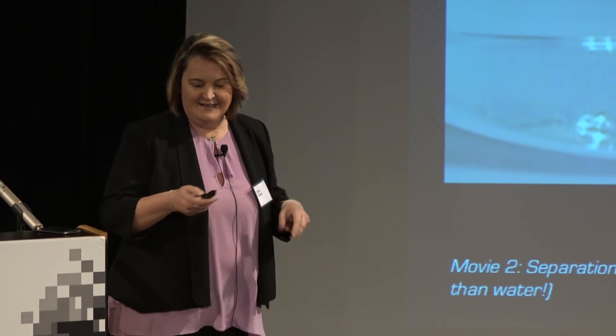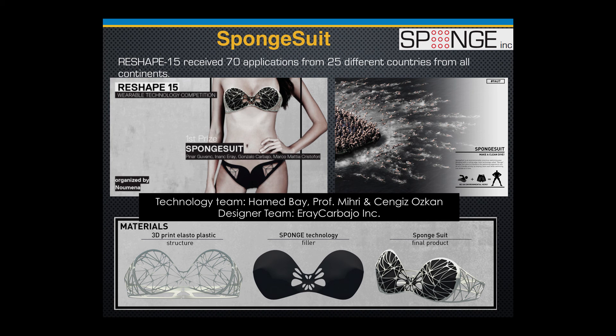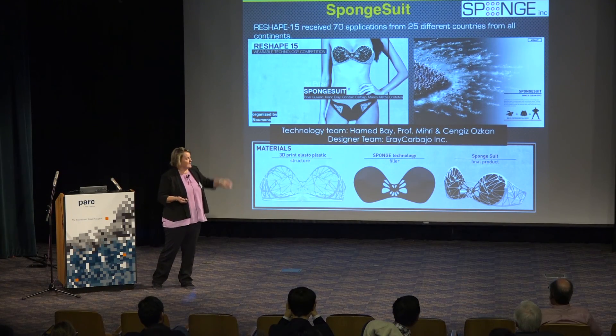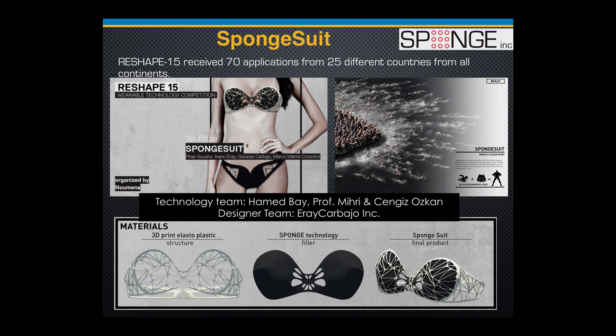I think many of us have said: if there is an oil spill, what can I do? That's why we started asking the question — as a person, what can we do? To personalize this technology, we developed the sponge into a wearable technology that helps you clean the ocean while you are swimming. We entered this wearable technology competition in Rome — there were about seven hundred applicants from 25 different countries — and we got first place. The technology used 3D printing along with our sponge material acting as a filler, making a sponge swimsuit.